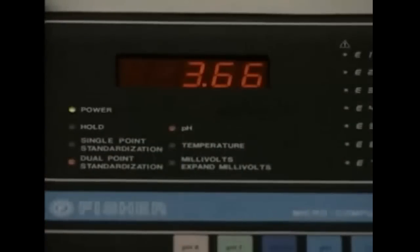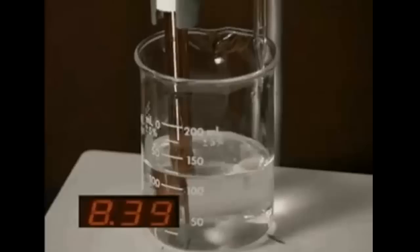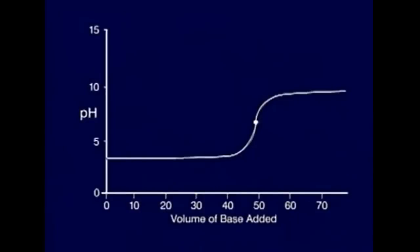This same reaction can be followed using a pH meter instead of an indicator dye. Initially, the pH changes very little as base is added. Suddenly, the pH changes rapidly as the endpoint passes. The solution quickly becomes very basic and again, the pH changes very little. The endpoint occurs at this middle point on the curve.